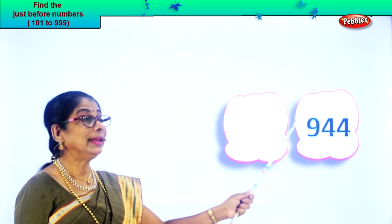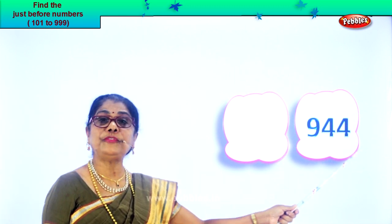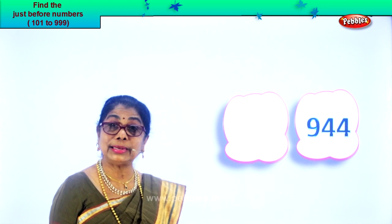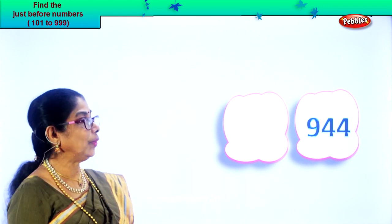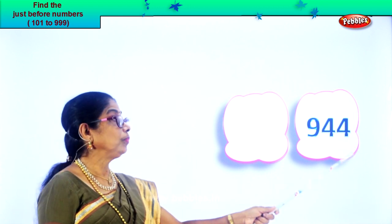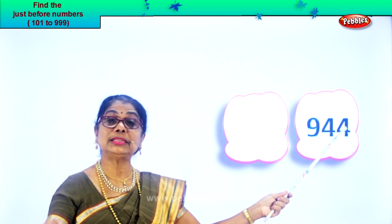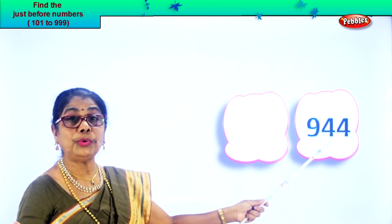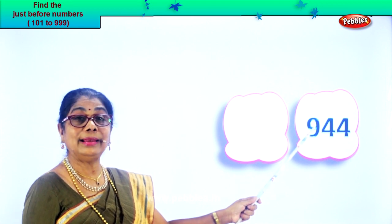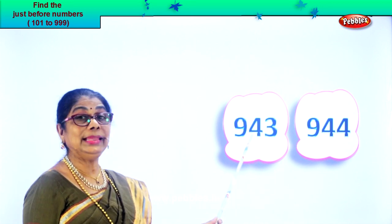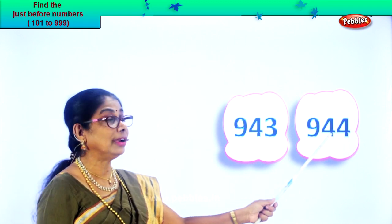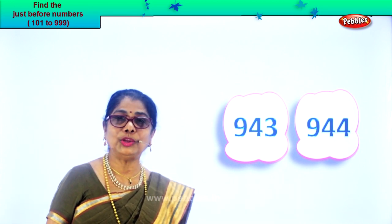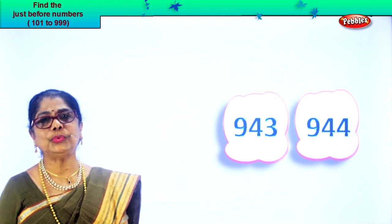Look — nine hundred and forty-four. Four in the ones place, four in the tens, and nine in the hundreds place. Read: nine hundred and forty-four. The ones place is four — one less than four is three. One less than forty-four is forty-three. So nine hundred and forty-three is the number just before nine hundred and forty-four. Nine hundred and forty-three, nine hundred and forty-four.